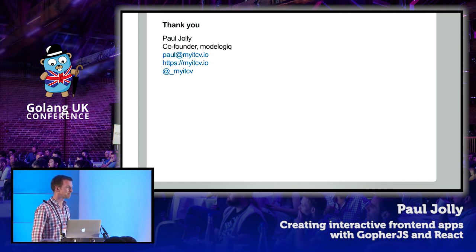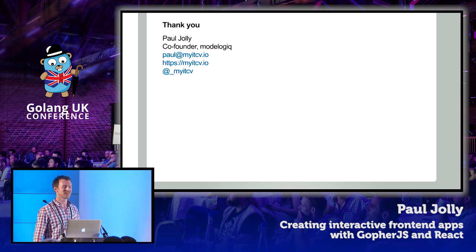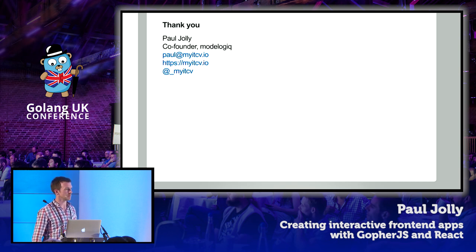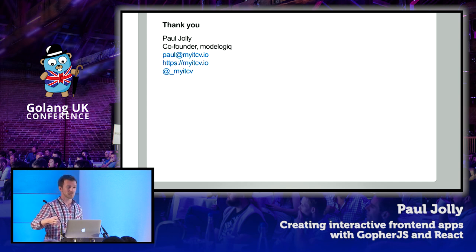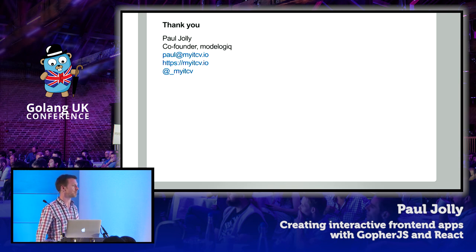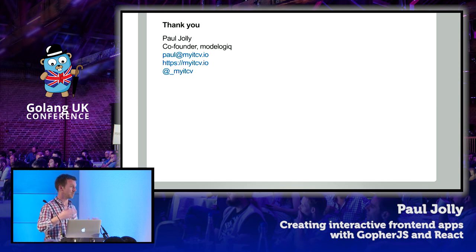Second question: you said you can use almost all of the standard library — what is it that you can't use? By definition, you can't do things that are file system based. Syscall is also something you can't do by definition. Net/http as well — but there's an XHR-based package you can use in place of that. There's documentation on the GopherJS website that has effectively a coverage report of the packages that aren't supported. You know it's supported because all the tests run within GopherJS as well — that's how you have the assurance that it's working as expected. It's a fantastic project — this builds on the shoulders of giants.